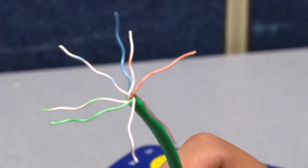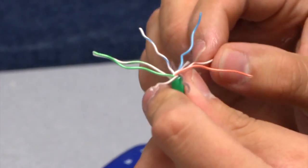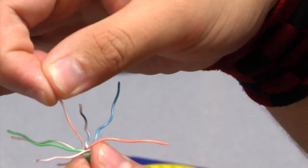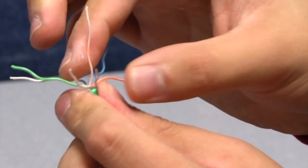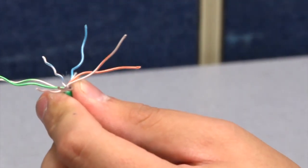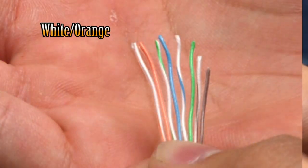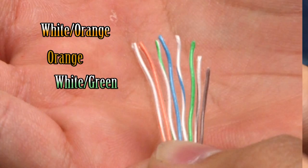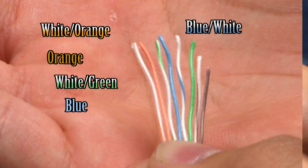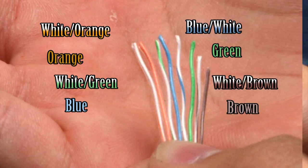Now, you see this mess right here, you're going to have to get it in the right order. Start off with the white-orange. White-orange goes first, and this is from left to right: white-orange, orange, then white-green, then solid blue, blue-white, green, brown-white, and then brown.